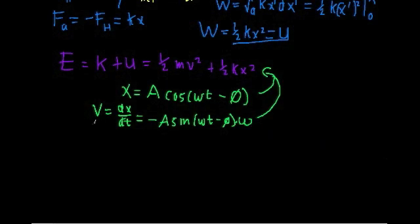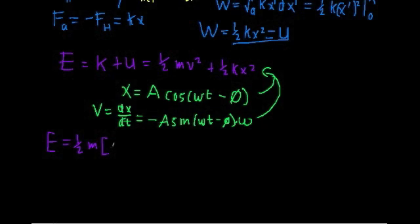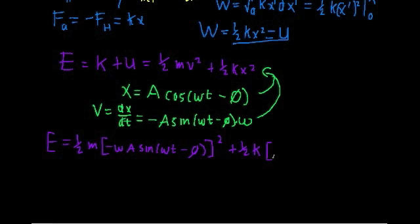The total energy E equals one-half m v squared, which is negative omega A sine omega t minus phi all squared, plus one-half k x squared, which is A cosine omega t minus phi all squared.